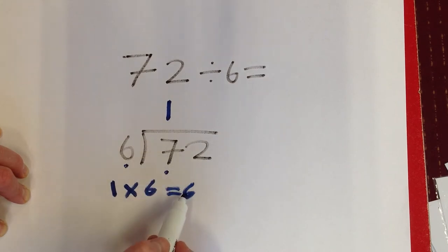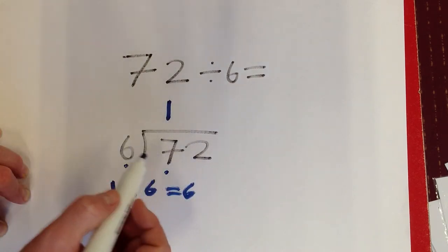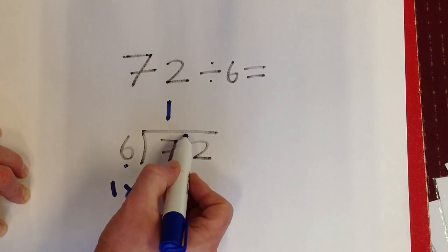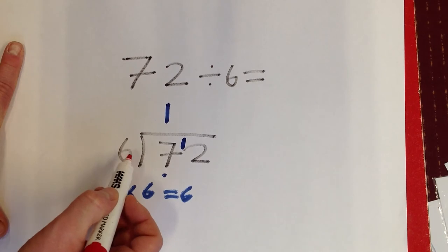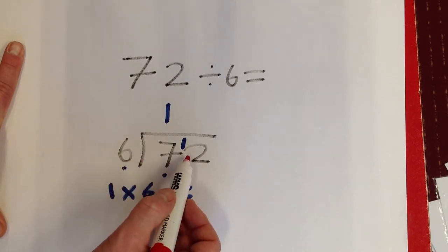7, though, take away 6, leaves 1 left over, 1 remainder. I'm putting that in the next column here. Next, I'm going to move on to 6. How many does it go into 12?